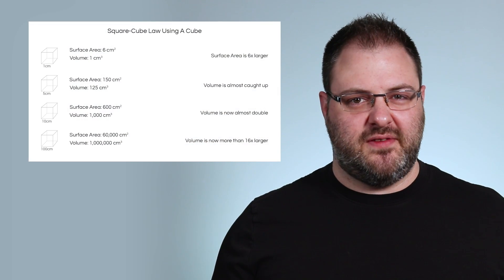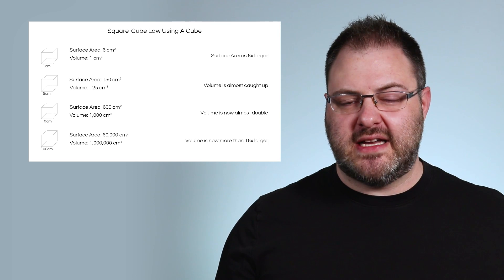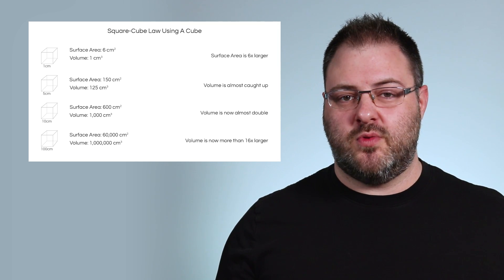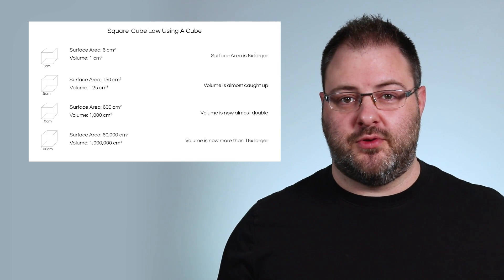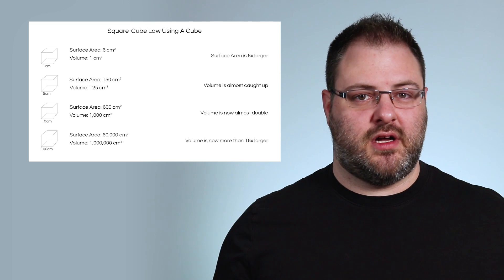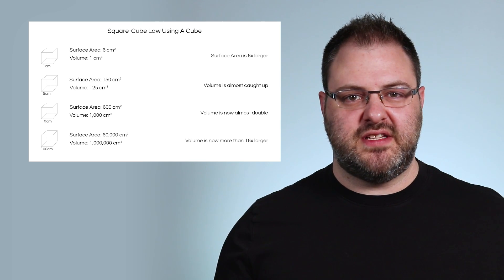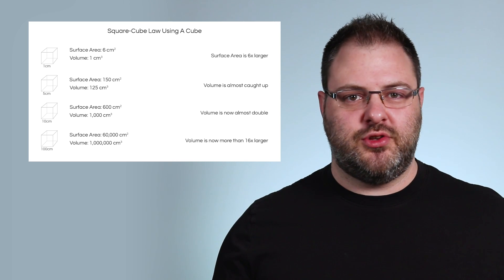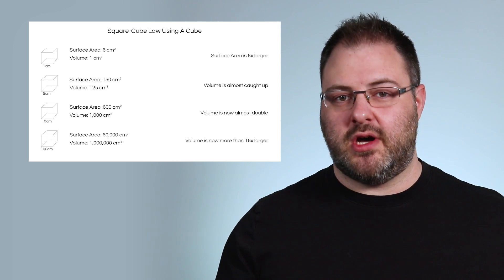Here's an example with cubes that have different lengths for their sides. If we start with a cube that has sides of one centimeter, it gives us a surface area of six square centimeters with one cubic centimeter of volume, so the amount of surface area here is six times higher than the volume. For a five centimeter cube, we now have 150 square centimeters of surface area and 125 cubic centimeters of volume, so the volume is already almost caught up.